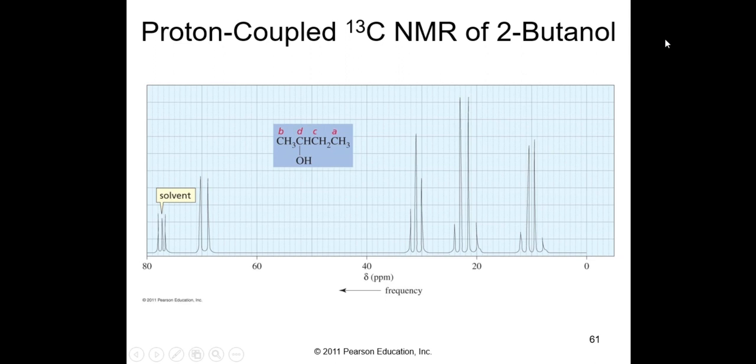Now here's the proton coupled C-13 of 2-butanol. This is valuable. Now you apply your N plus 1 rule to carbon. There's the solvent identified down around 78, due to the deuterated chloroform, a little bit of CHCl3. I'm seeing a quartet, a quartet, a triplet, and a doublet.